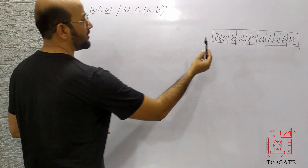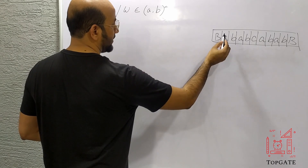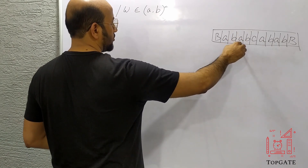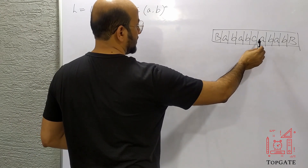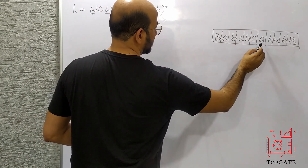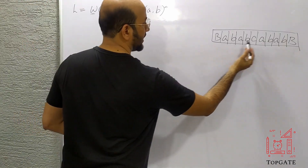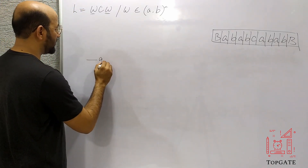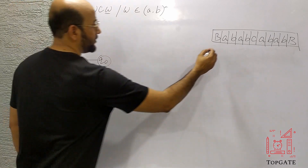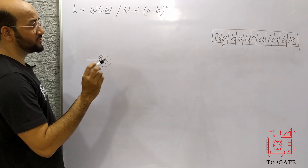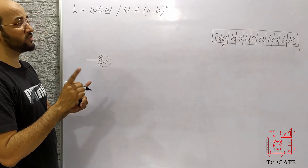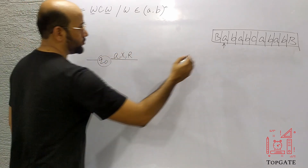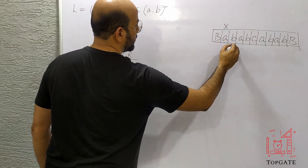The logic is: I will start reading from the left. I will read this A and change it to X, then go to the right side. While going right I will skip all the A's and B's, then skip this C. After C I need this same A. So this character and this character should match — we will work this way only.